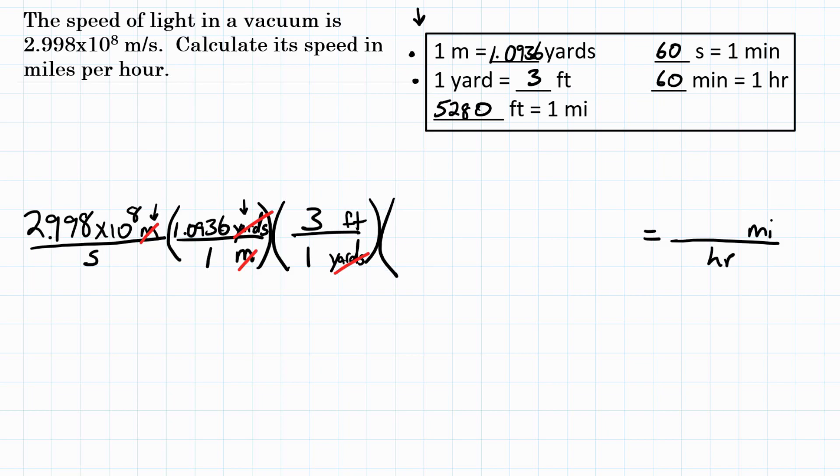And now I know the relationship between feet and miles. So feet go on the bottom, miles go on top. 5,280 feet is one mile. So here, feet would cancel and I'm left with miles.